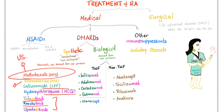Biological DMARDs: TNF inhibitors include infliximab, adalimumab, certolizumab, golimumab, and etanercept. Non-TNF biologics include abatacept, tocilizumab, rituximab, and the well-known anakinra.